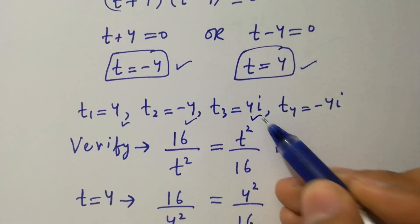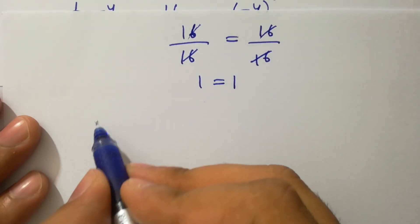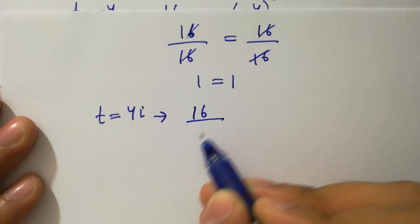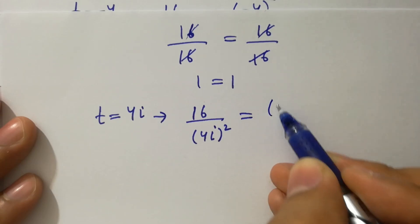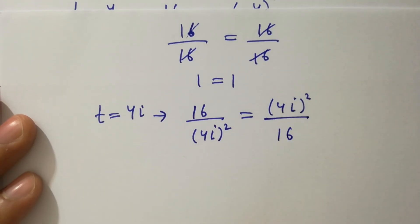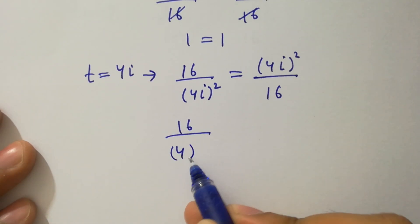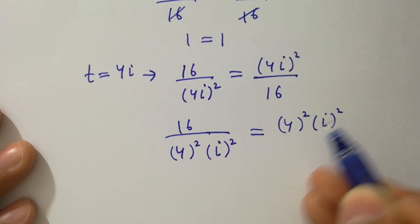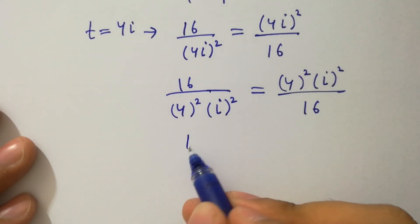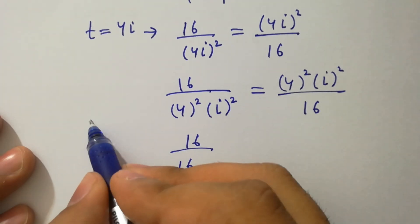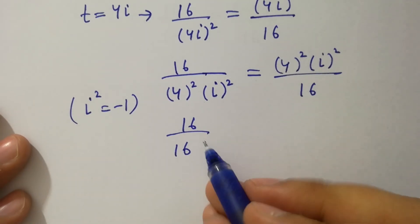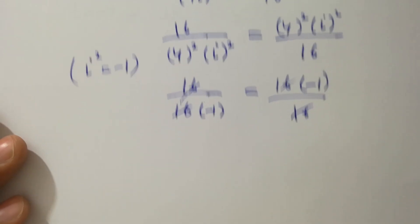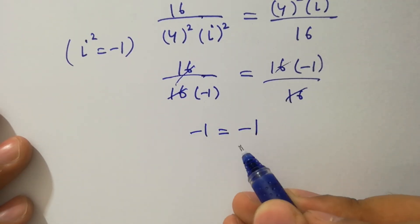Now take t equals 4i and put into the equation. We have 16 over 4i squared equal to 4i squared over 16. Solving: 16 over 4 squared times i squared equal to 4 squared times i squared over 16. Since i squared equals minus 1, we have 16 over 16 times minus 1 equal to 16 times minus 1 over 16. The 16s cancel and we have minus 1 equal to minus 1, so left hand side equals right hand side.